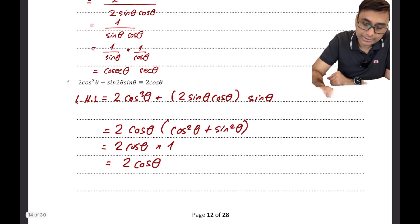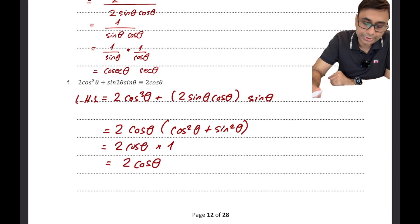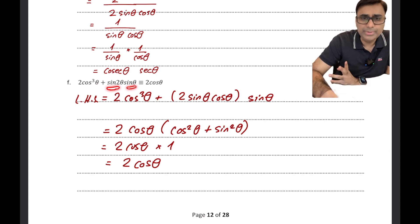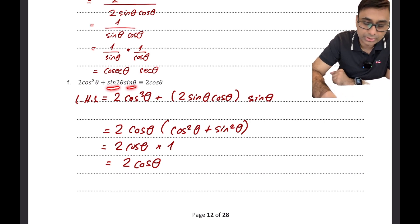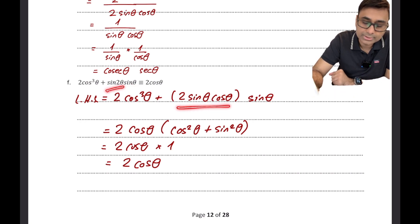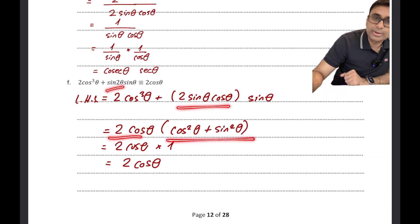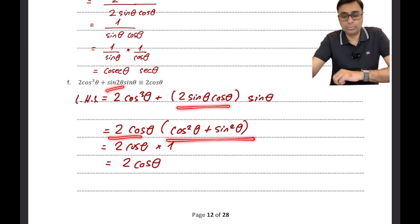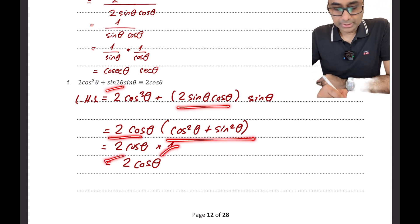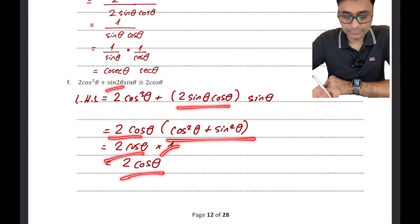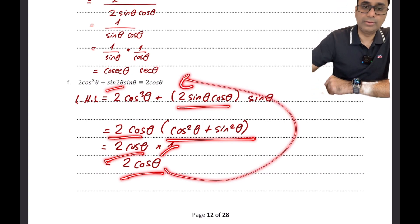Moving on: I replace sin 2θ as 2 sin θ cos θ, then take 2 cos θ as a common factor. Using the identity sin²θ + cos²θ = 1, this becomes 1, so the expression simplifies to 2 cos θ, which is exactly what I had to prove.